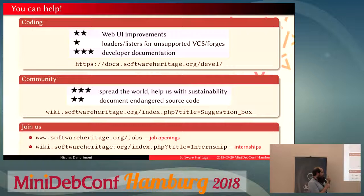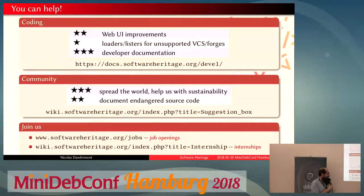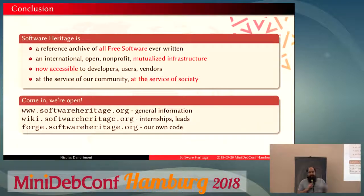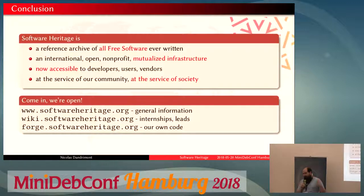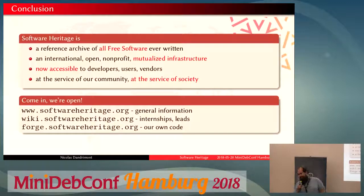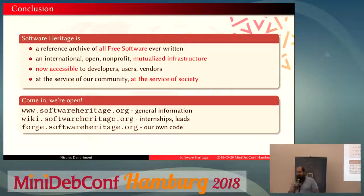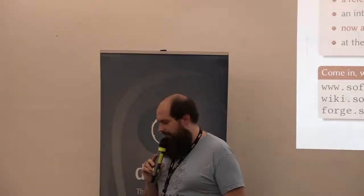If you want to join us we also have some job openings available — for now they're in Paris, so if you want to consider coming to work with us you can look into that. Software Heritage is building a reference archive of all the free software ever written, in an international, open, non-profit, and mutualized infrastructure opened up to everyone — all users, vendors, and developers can use it — at the service of the community and for society as a whole. If you want to join us you can look at our website, look at our code, and come talk to me. I think we have about 10 to 12 minutes for questions.